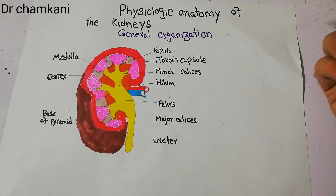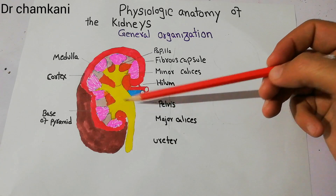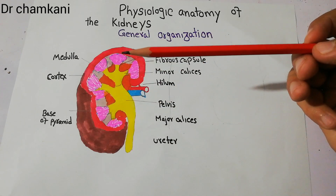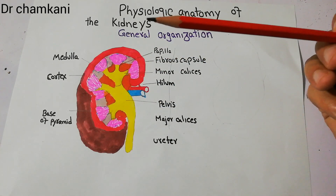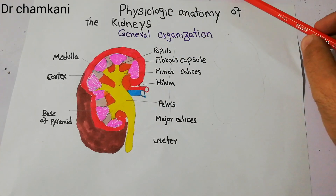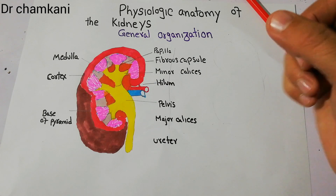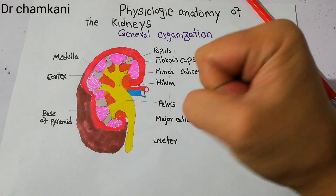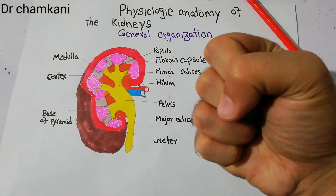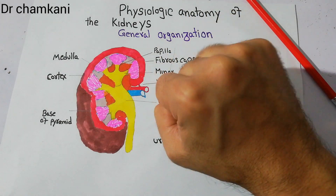The kidneys are basically present on the posterior wall of the abdomen, outside the peritoneal cavity, and each kidney is around 150 grams, which is about the size of a clenched fist. So in an adult person, when they clench their fist, the kidney is around this size.